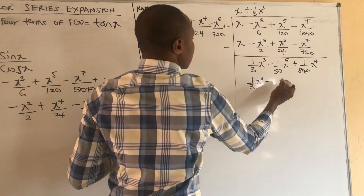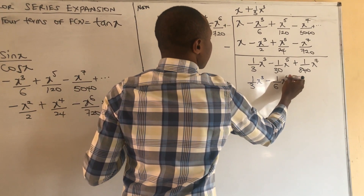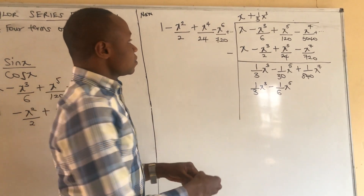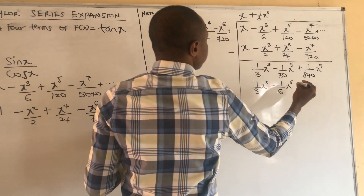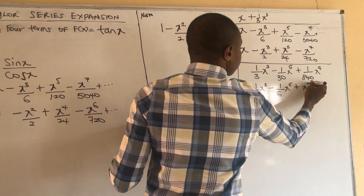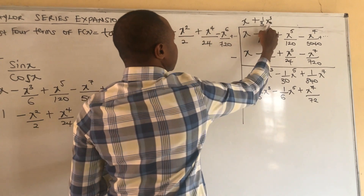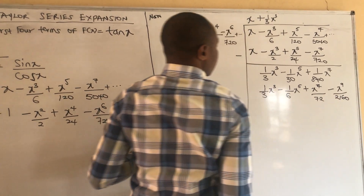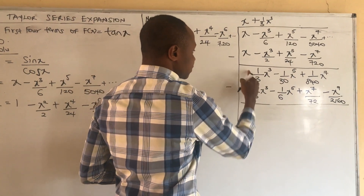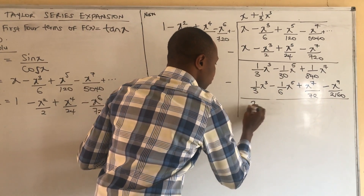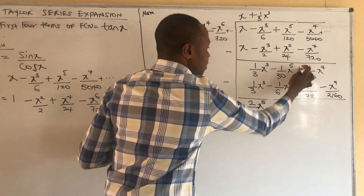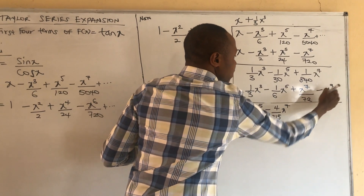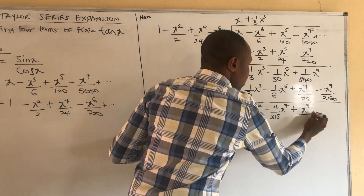Continuing the multiplication: (1/3)x³ times (x⁴/24) gives +x⁷/72, and (1/3)x³ times (−x⁶/720) gives −x⁹/2160. We subtract again — these eliminate to give zero — and simplifying the remainder gives (2/15)x⁵, then −(4/315)x⁷, and we note an x⁹ term of +x⁹/2160 in the remainder.